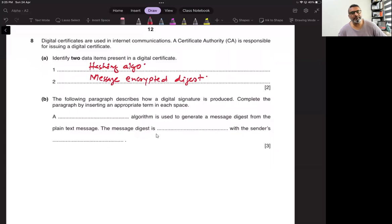The following paragraph describes how a digital signature is produced. Complete the paragraph by inserting an appropriate term in each space. A hashing algorithm is used to generate a message digest from the plain text. The message digest is encrypted with the sender's private key.